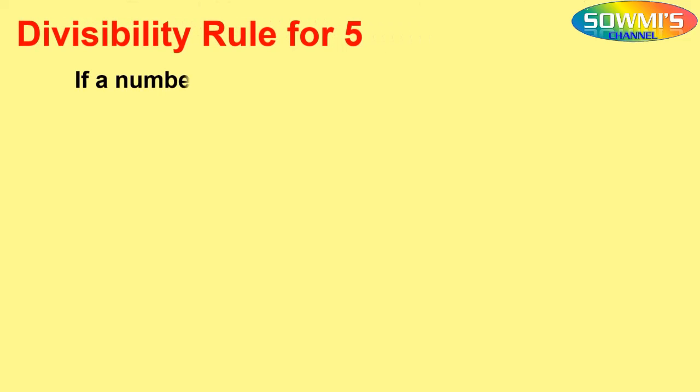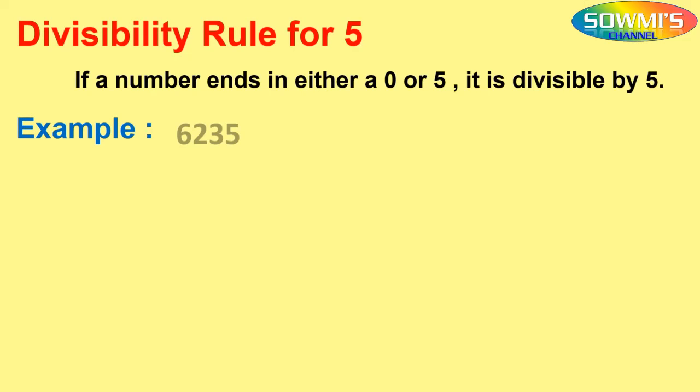First we will see divisibility rule for 5. If a number ends in either a 0 or 5, it is divisible by 5. For example, 6235. Look at the number, it ends with 5, so the number 6235 is divisible by 5.